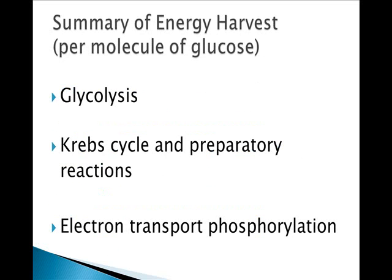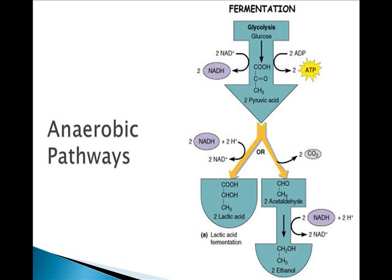To sum up the energy harvest: electron transfer yields 32 ATPs, glycolysis yields 2 ATPs net, and the Krebs cycle yields 2 ATPs — giving a grand total of 36 ATPs produced per glucose molecule in aerobic respiration, versus anaerobic respiration which gives only 2 ATPs.